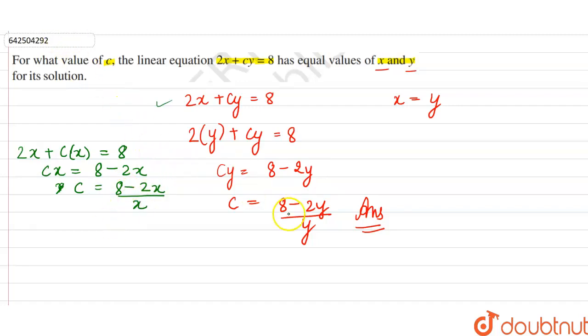So in terms of y, the answer is c = (8 - 2y)/y, and in terms of x, it is c = (8 - 2x)/x.